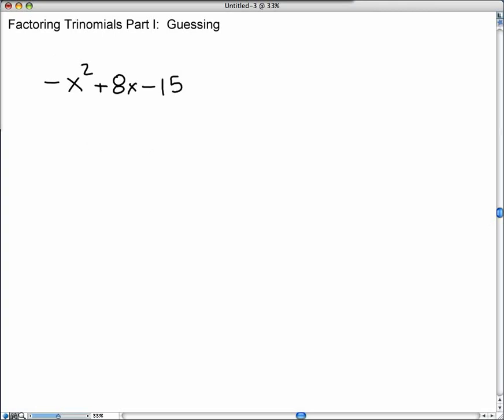Let's try a new problem now. This one has a negative in front of the x square. Let's factor out that negative. It's going to help us factor, especially when we're guessing. Let's factor that negative out. So that's going to be x square and that's going to be negative 8x plus 15.